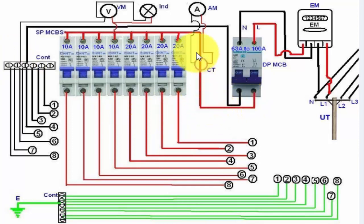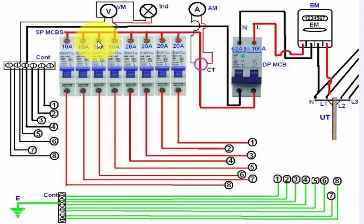The phase supply is connected to the single pole MCB circuit breakers, some of which are 10 ampere and some are 20 ampere. We can also use 16 ampere, 6 ampere, or 32 ampere according to the load requirements.